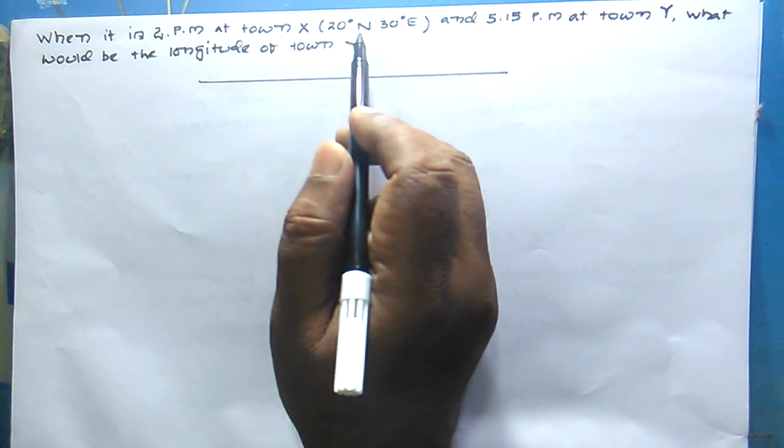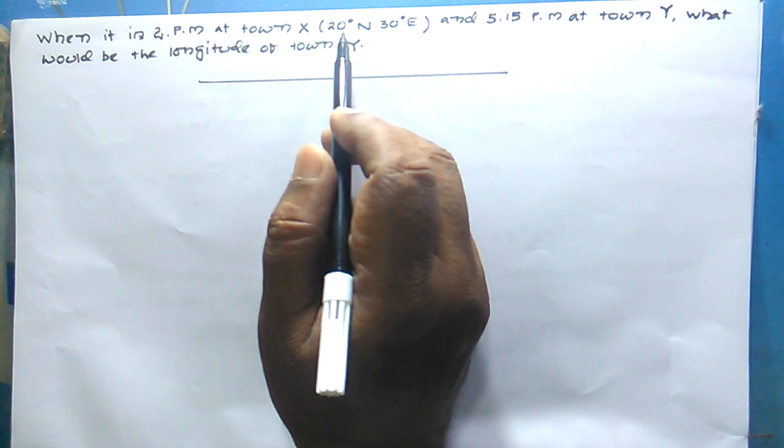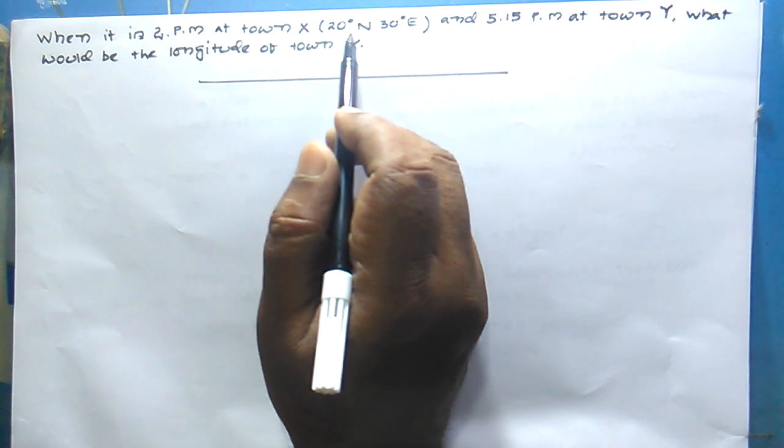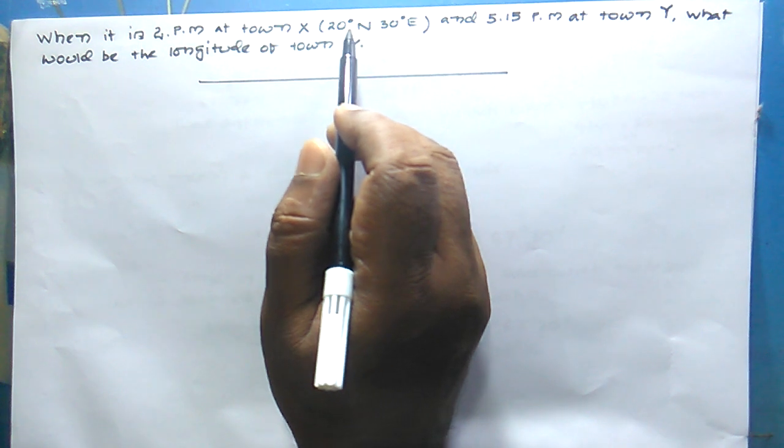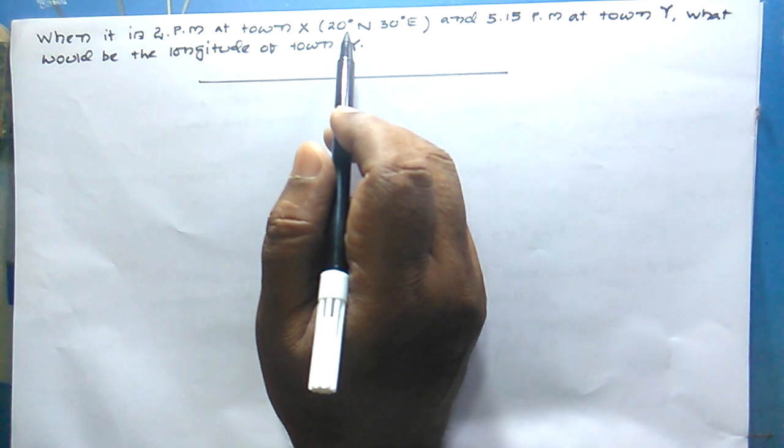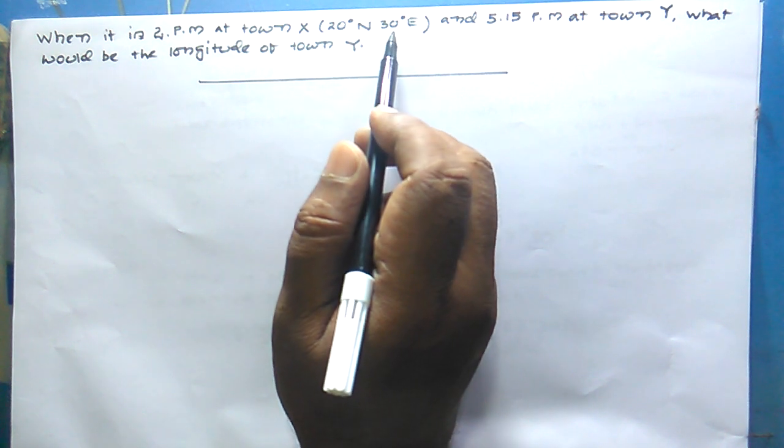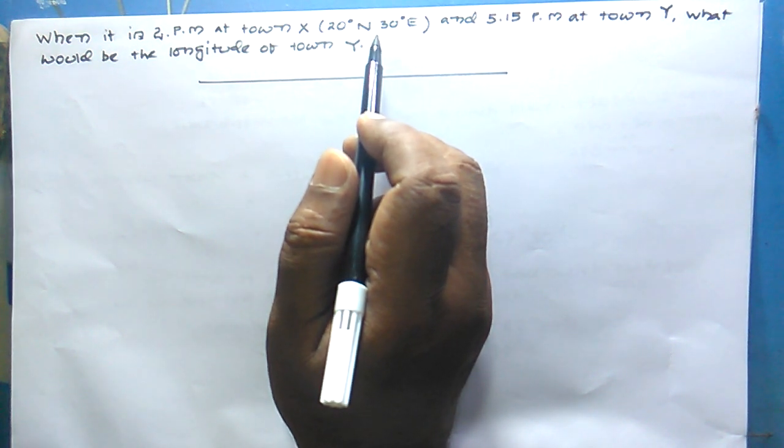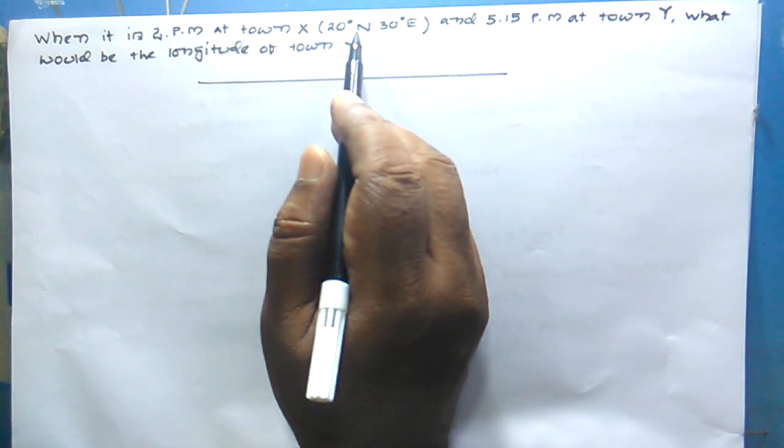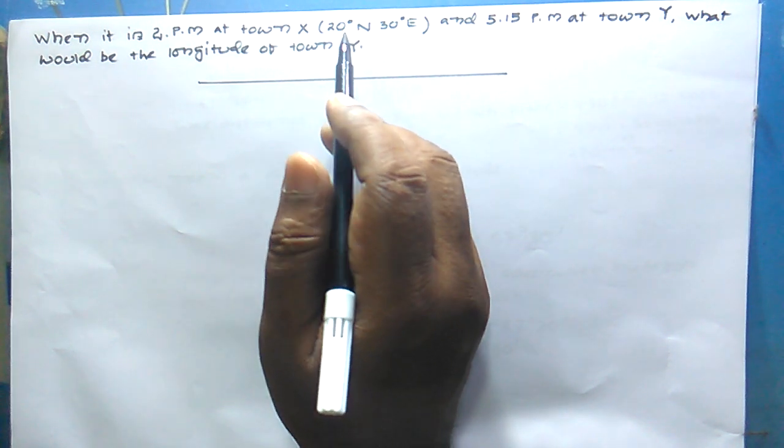Now here, if you see 20 degree north, this does not mean anything to us. It's just to confuse you, because this is actually a latitude of a place and we are not concerned with latitude. It is only the longitude from which we can find out the time.